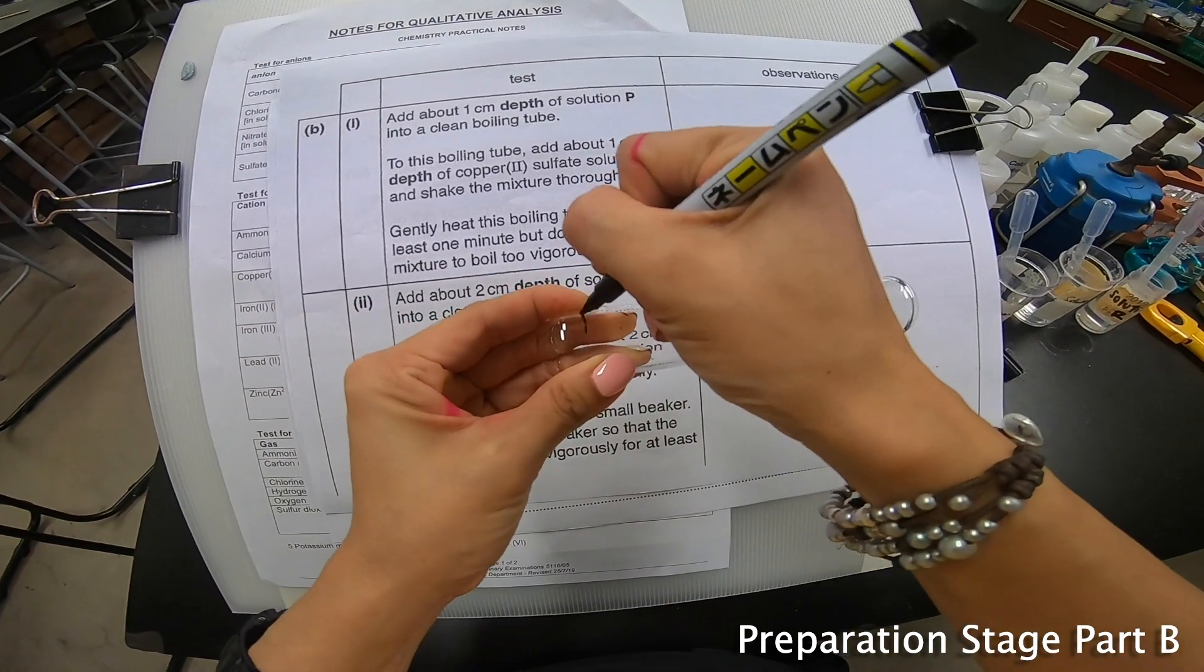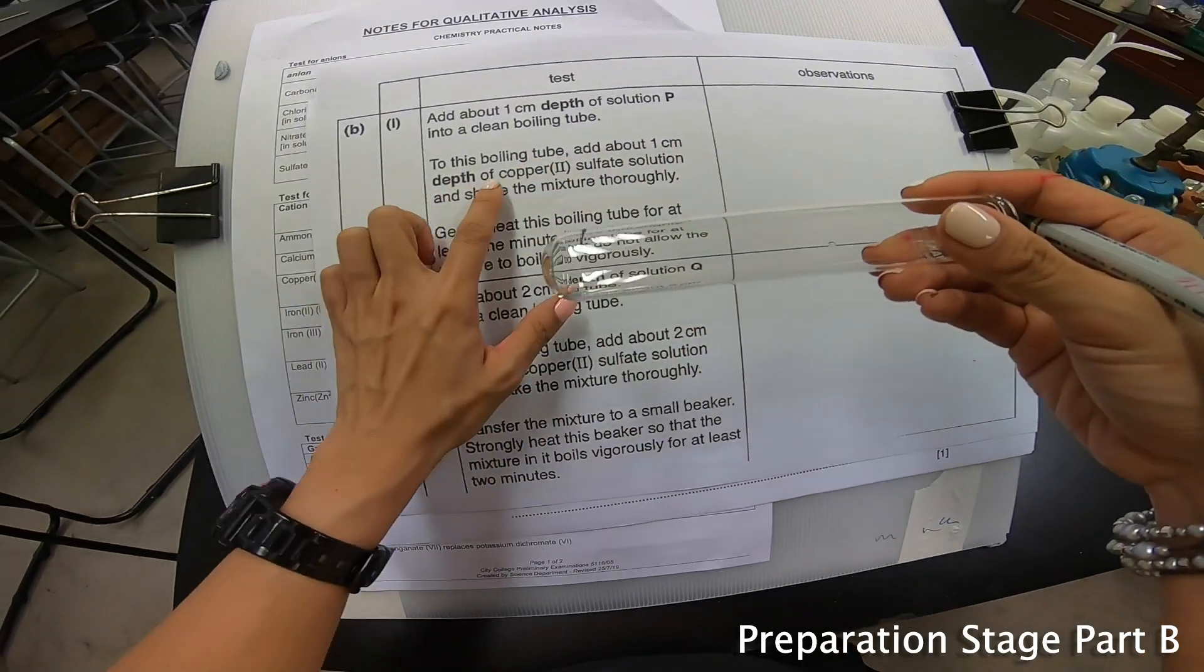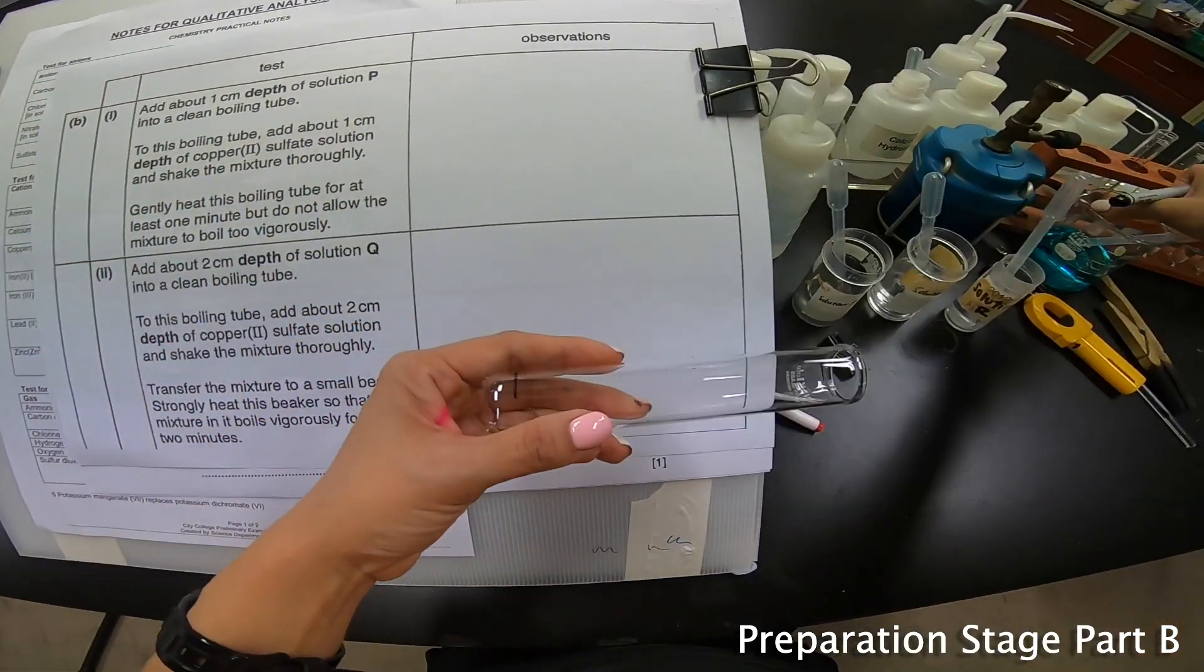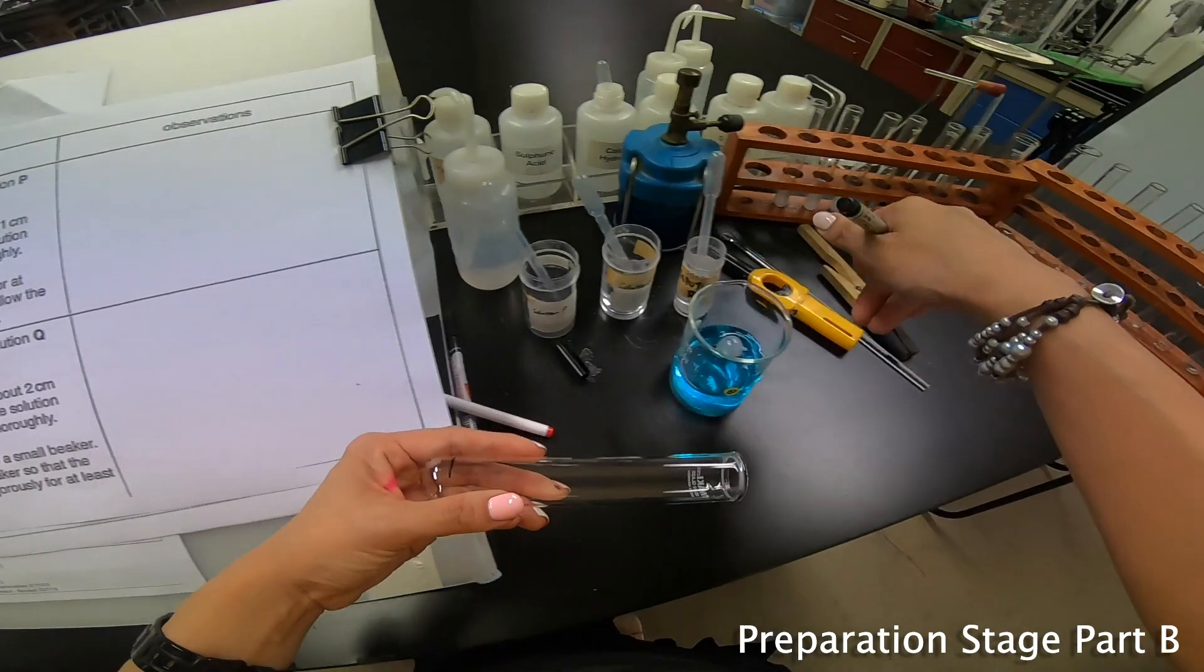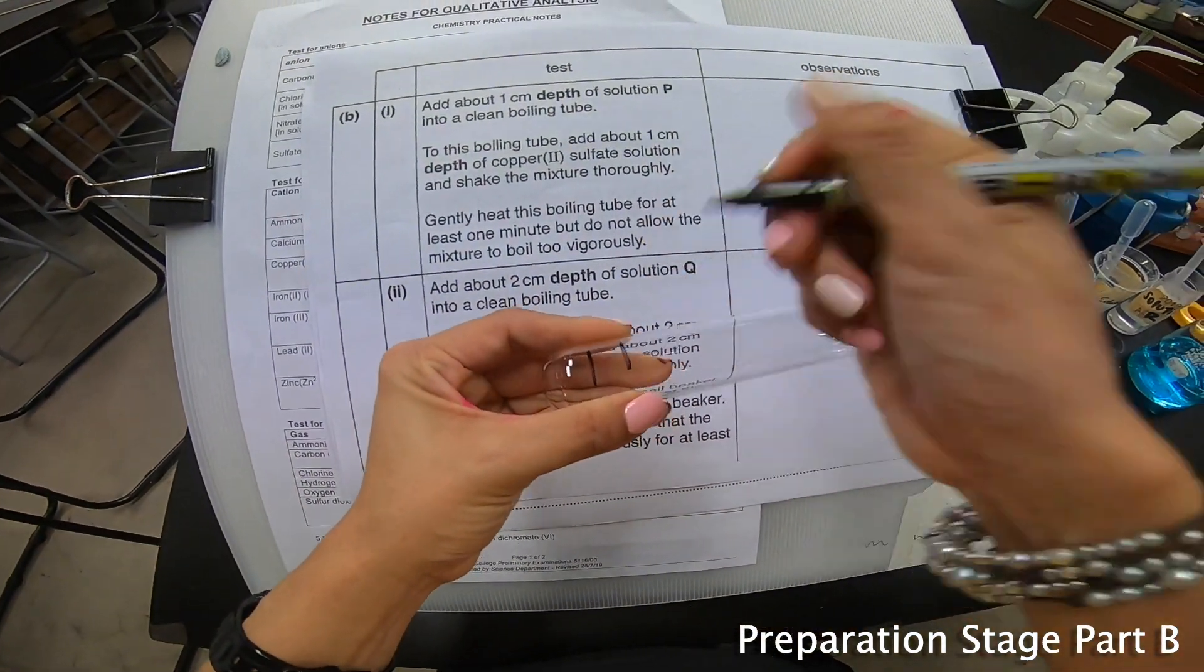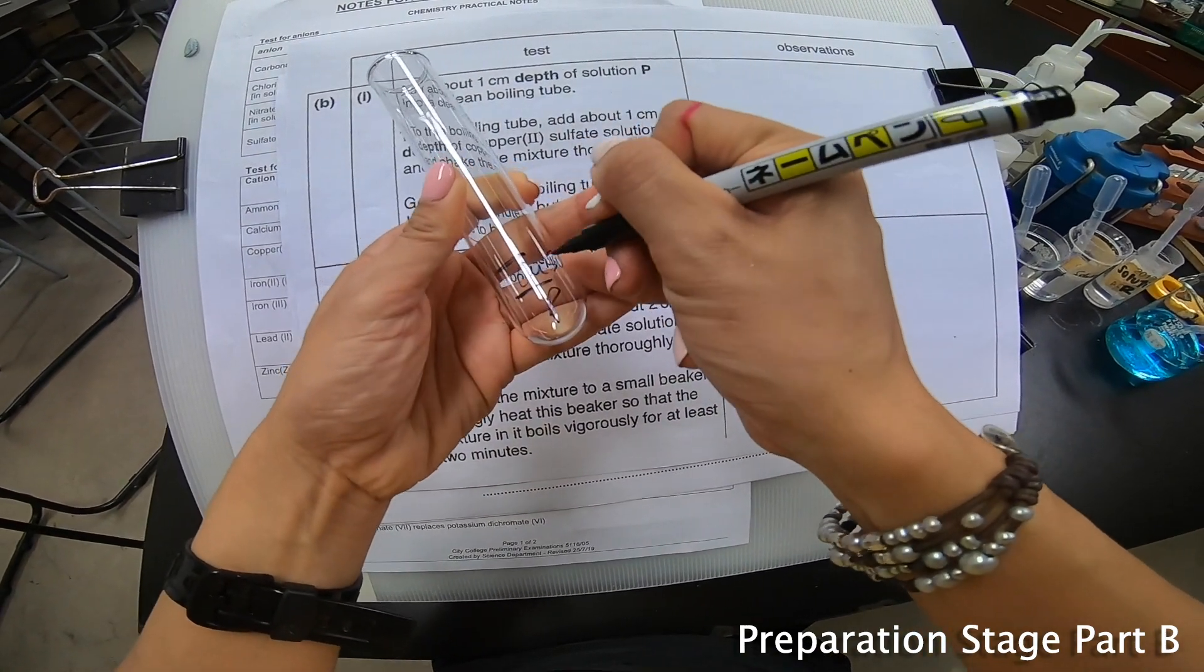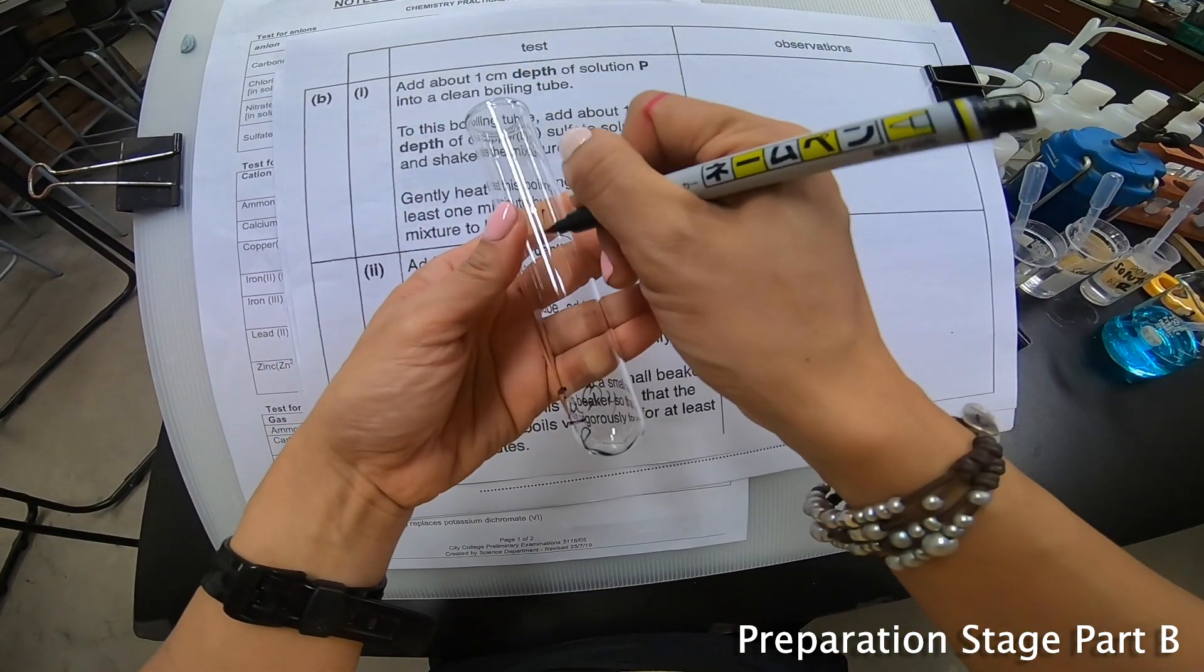Add about 1 cm depth of solution P into a clean boiling tube. This is a boiling tube, 1 cm. So ready? Let's prepare. 1 cm P and then to this boiling tube add another 1 cm depth of copper 2 sulfate solution. This is copper 2 sulfate solution over here. So I add another 1 cm. So this is P, this is CuSO4. Making sure that I write this as B part 1.